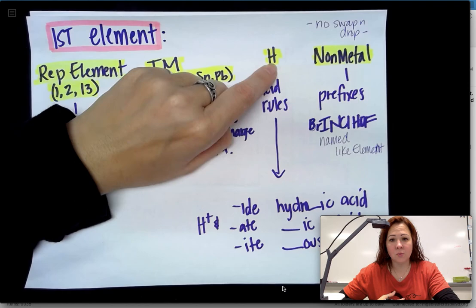The next one is I2. I only have iodine there. It's not paired up with anything else. Iodine is a member of Brinkelhoff. So whenever you write iodine like I2, because it's in Brinkelhoff, it's just named as the element. No prefixes or anything like that. It's just iodine.